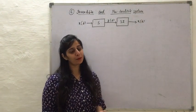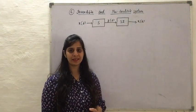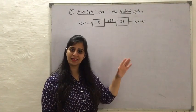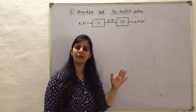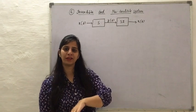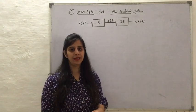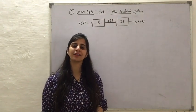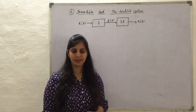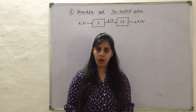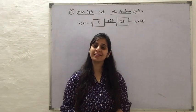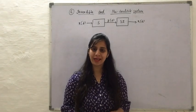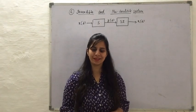If it is not possible to design a system that could perform the inverse operation of another system, then it is called a non-invertible system. For better understanding, let us look at some examples.